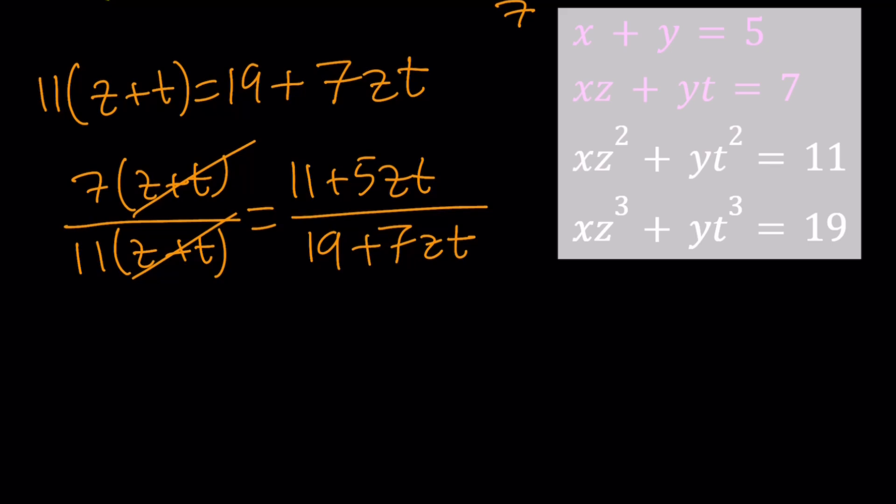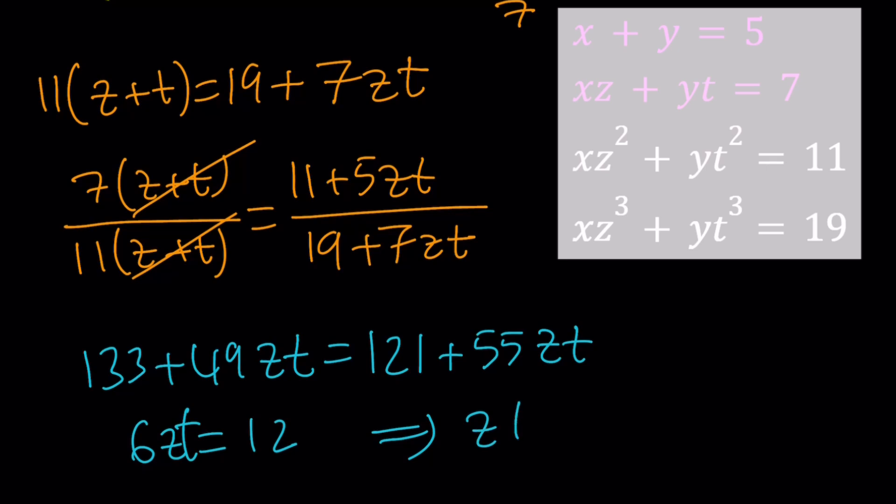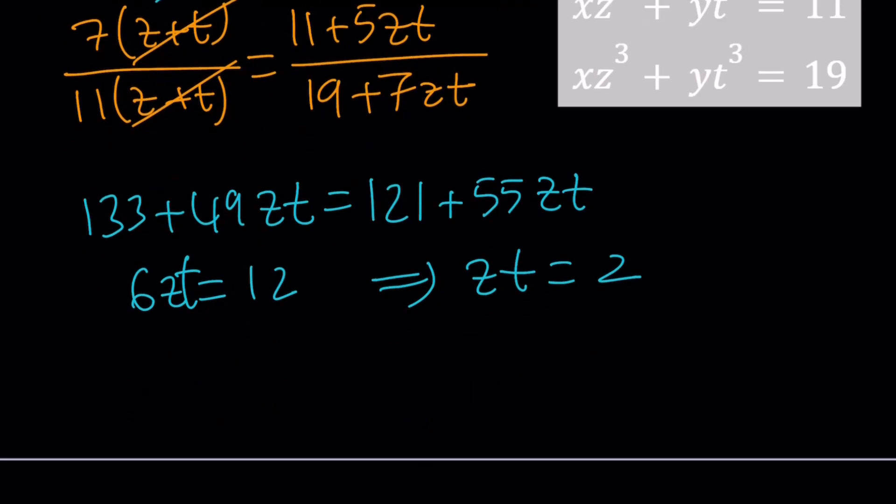Let's do it. This is going to take a while, so bear with me. From here, we get the following. If you multiply 19 times 7, it's going to be 133 plus 49zt, and then 11 times 11 is 121 plus 55zt. So 6zt is going to be 12. From here, I mean zt, not just z. Zt is going to be 2. If zt is 2, we're going to go ahead and plug it in here. That's going to be 7 times 2 equals 14 plus 19 is going to be 33. And from here, z plus t is going to be 3. Awesome.